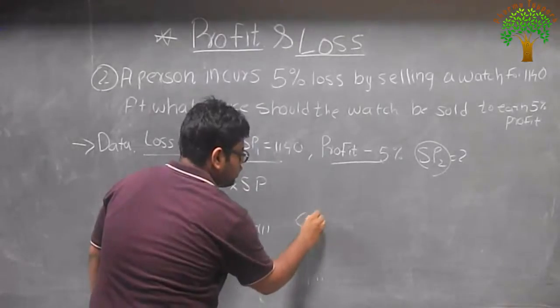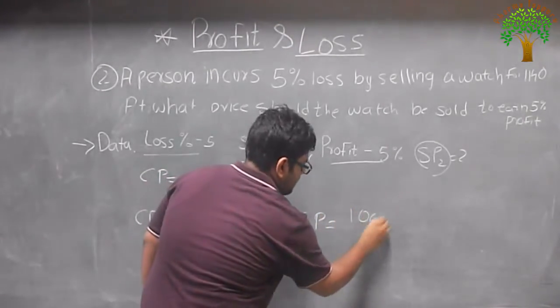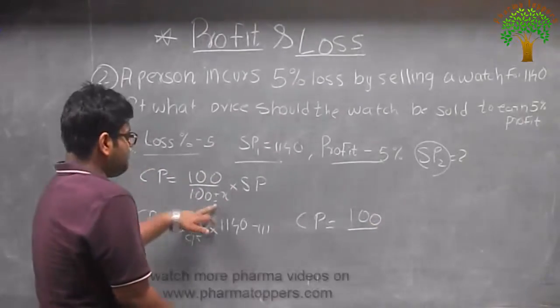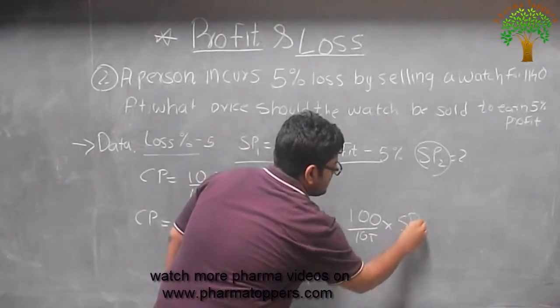And second equation again the cost price of the commodity being the same. It's 100 but this time it's plus 5 because of the gain, that is 105, might depend on the new selling price.